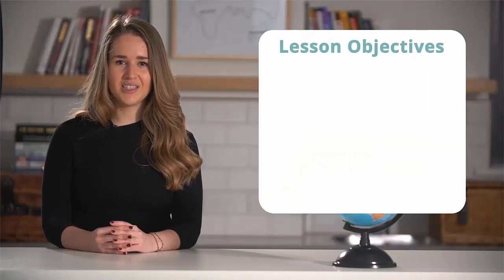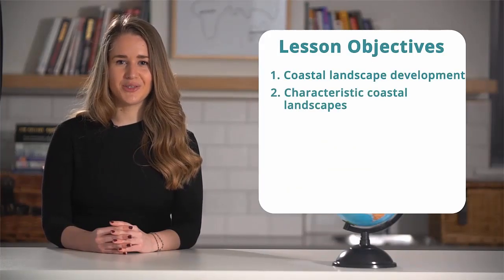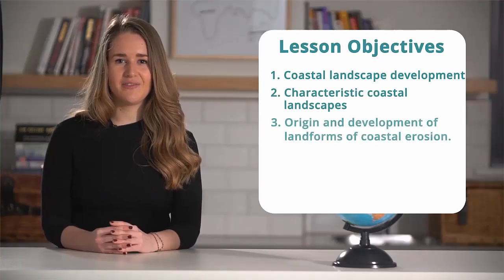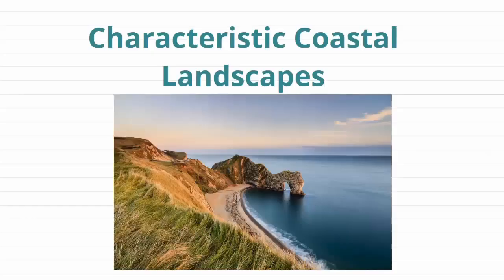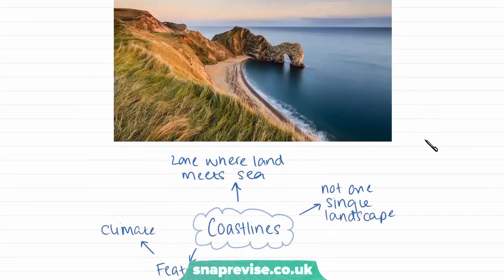Hi guys, this is the first video on coastal landscape development. We will be learning about characteristic coastal landscapes and the origin and development of landforms of coastal erosion. We're going to learn about characteristic coastal landscapes, and this is a photograph of a very well-known coast in Dorset, where we have very distinct coastal features. We're going to learn about some of these features in this video.